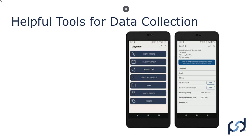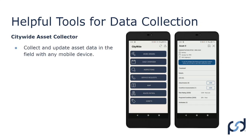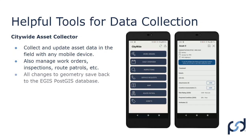Another helpful tool is Citywide's mobile apps, especially Citywide Asset Collector. You're able to collect and update asset data in the field with any mobile device — iOS or Android. You can also manage work orders, inspections, route patrols, and more. We're putting a lot of time and effort into developing this because clients use it heavily. For EGIS clients, any changes made to the geometry are saved directly back to the EGIS PostGIS database.